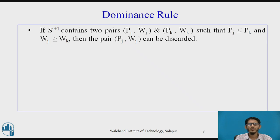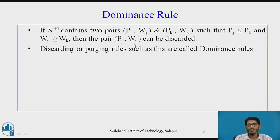Now, let us first see the dominance rule. If si+1 contains two pairs, that is first pair is (pj, wj) and the other pair is (pk, wk) such that pj is less than equal to pk and wj is greater than equal to wk. In that case, the pair (pj, wj) can be discarded. Now, this is because of the fact that since pj value is less than pk value and wj value is greater than wk, it means that profit is less and weight is more. So, such kind of a tuple (pj, wj) is discarded.